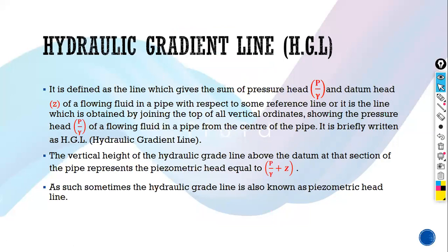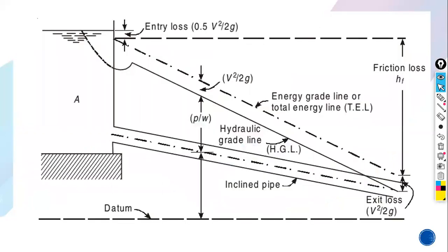Now we will see a new concept: the hydraulic grade line. The hydraulic grade line is defined as the line which gives the sum of pressure head — P by gamma — and datum head Z of a flowing fluid in a pipe, with respect to some reference line. It is a line plotted using the values of pressure head and datum head.